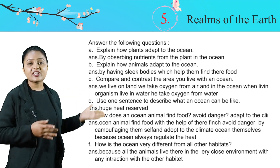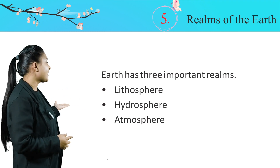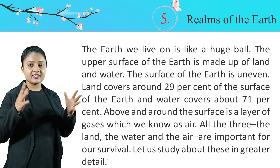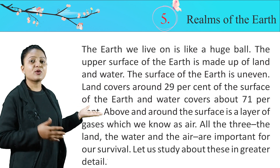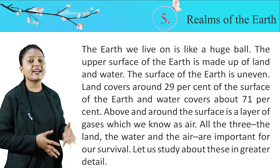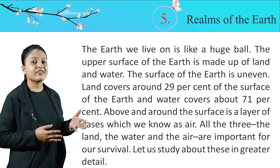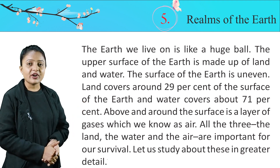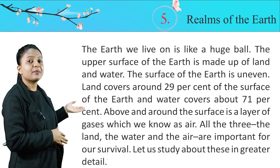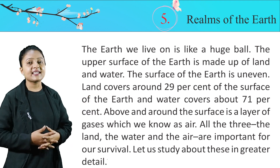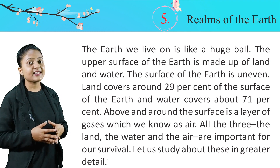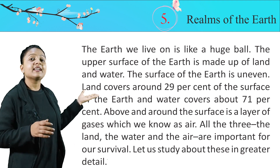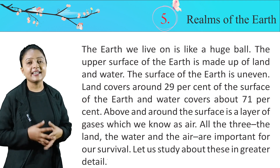Earth has three important realms: Lithosphere, Hydrosphere, and Atmosphere. The earth we live on is like a huge ball. The upper surface of the earth is made up of land and water, and the surface of the earth is uneven. Land covers around 29% of the surface of the earth and water covers about 71%. Above and around the surface is a layer of gases which we know as air. All three — the land, the water, and the air — are important for our survival. Let us study about these in greater detail.